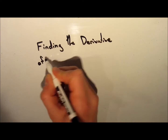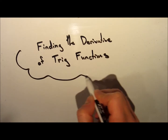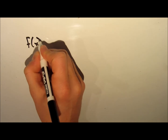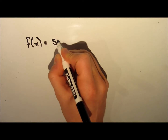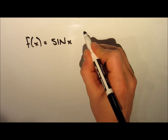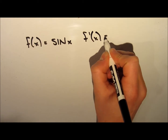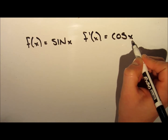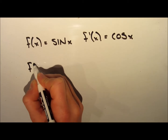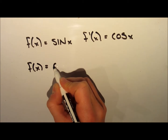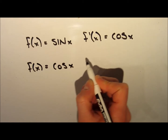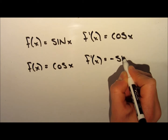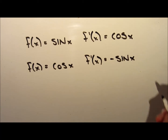Today I'm going to show you how to take the derivative of trigonometric functions. In this video I'm going to keep it simple and only talk about the sine function and the cosine function. If you have a function that is sine of x, then the derivative is cosine of x. And if you have f of x equal to cosine of x, then the derivative is negative sine x. These are two things you'll probably just have to remember.